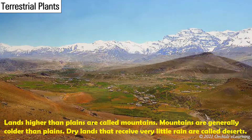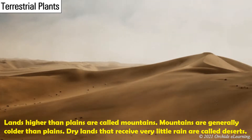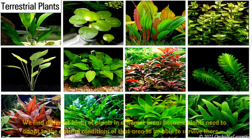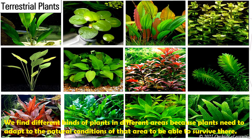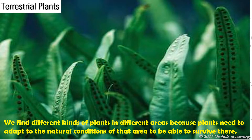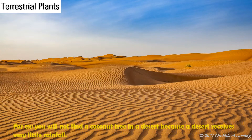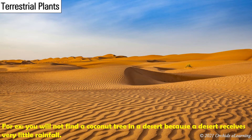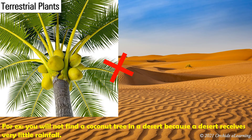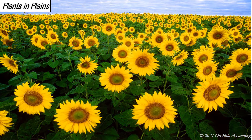Dry lands that receive very little rain are called deserts. We find different kinds of plants in different areas because plants need to adapt to the natural conditions of that area to be able to survive there. For example, you will not find a coconut tree in a desert because a desert receives very little rainfall.